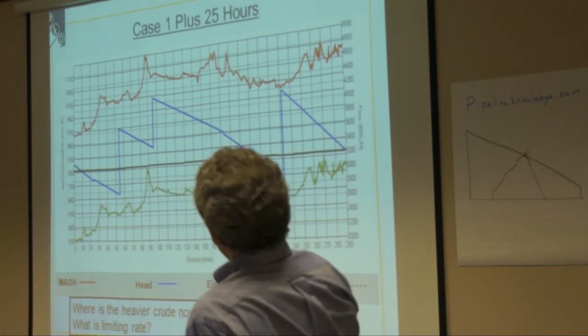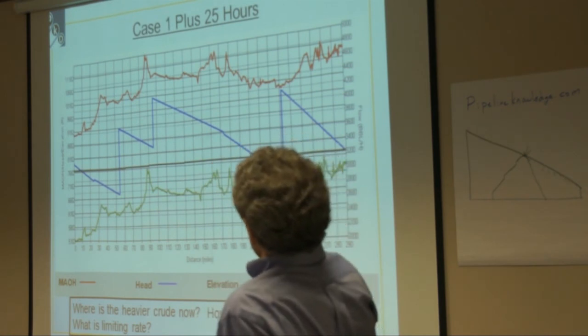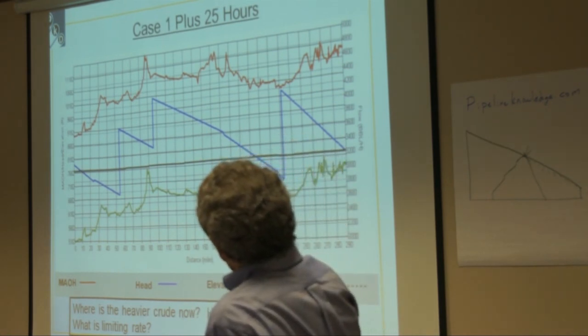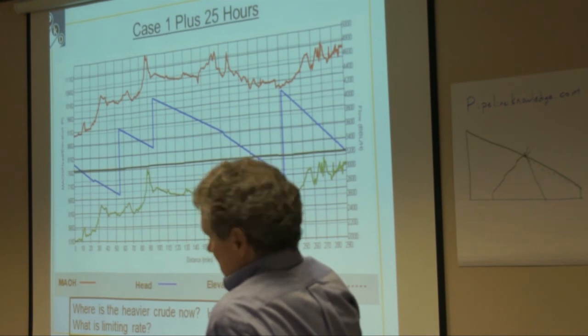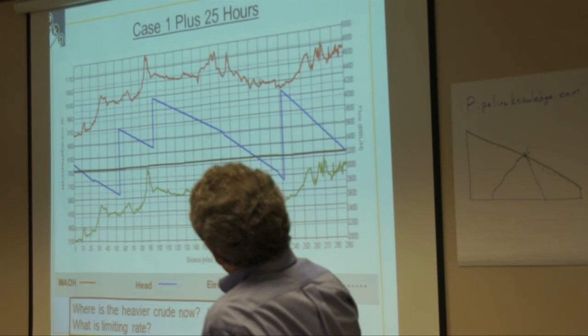And then what's limiting the rate right now? What point, what operating thing is limiting your rate? The third station? This is one, two, three, four, fourth station. The fourth station, right.